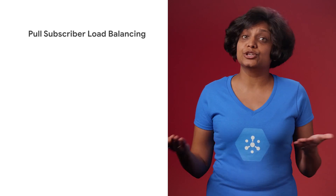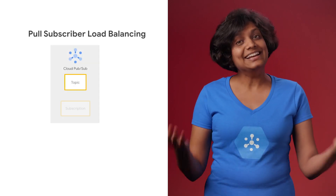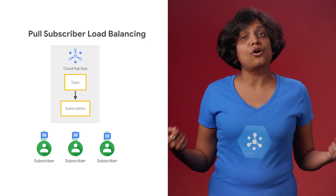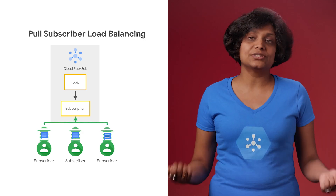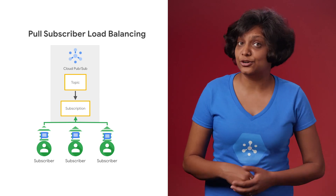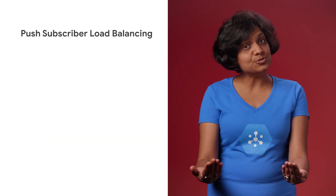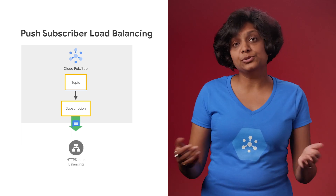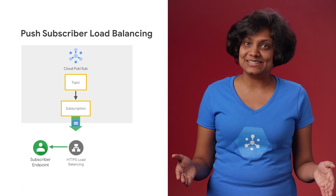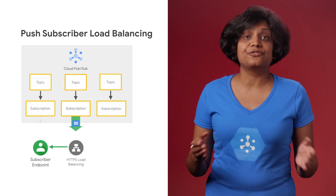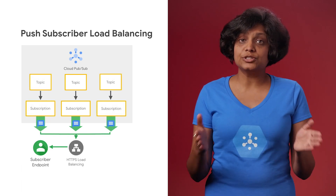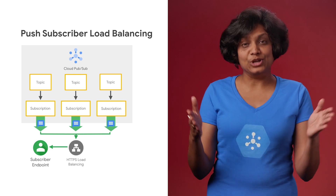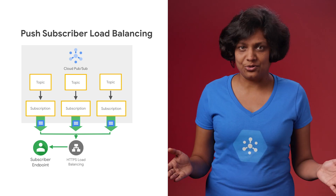How do you balance load while using push versus pull? In the pull mechanism, multiple subscribers can make pull calls to the same shared subscription, and each subscriber will receive a subset of the messages. While in the push mechanism, the push endpoint itself can be a load balancer distributing the request to the right backend. The real use case for this push model is fan-in: multiple subscriptions point to the same endpoint, so as you add new topics, you don't have to change anything about your subscriber.